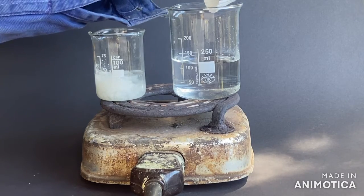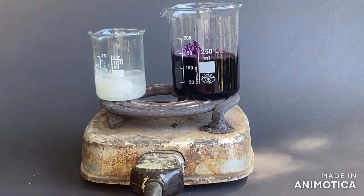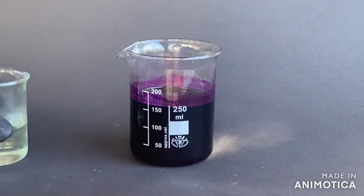Into the larger one I added 30 grams of potassium permanganate. Then I added the chloride solution into the permanganate solution.